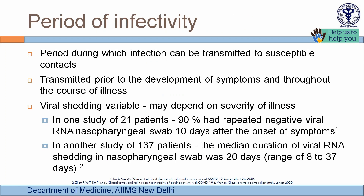The period of infectivity is the time during which infection can be transmitted to susceptible contacts. For COVID-19, transmission can occur even before symptom onset — when the person is unaware they are infected — and continues throughout the course of illness. Viral shedding in nasopharyngeal swabs, the predominant identification method, depends upon disease severity.